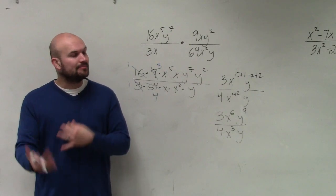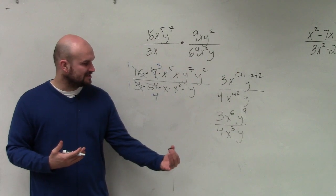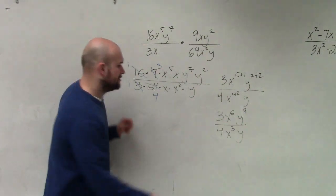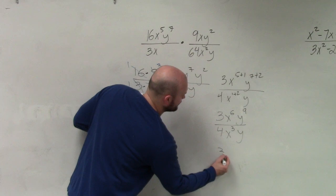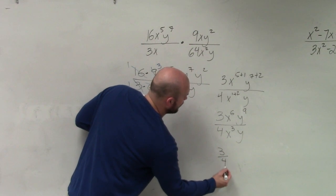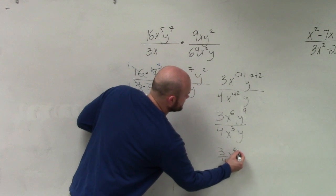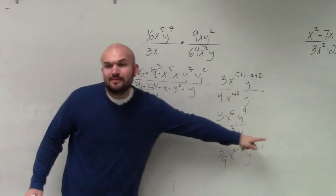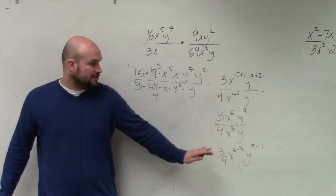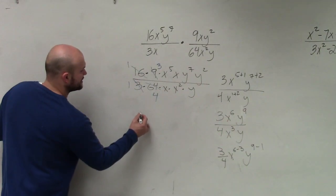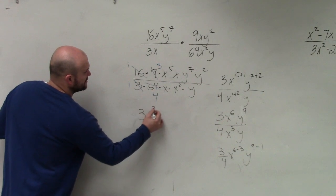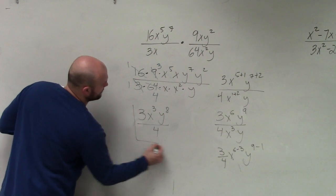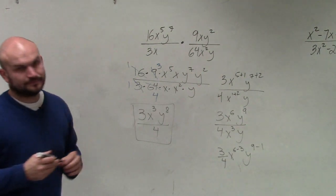Now I apply the quotient rule of my rules of exponents and subtract the powers. So this becomes 3 fourths, x to the sixth minus 3, y to the ninth minus 1. And since those are both going to be positive, they remain in the numerator, and my final answer is 3x to the third, y to the eighth, all over 4.